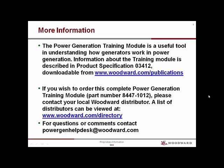This powerful interactive power generation training module is available to purchase. It allows a student to learn and understand many concepts of power generation. The model is operated on your PC and performs exactly like a real engine system. For more information, download product specification 03412 from our website at www.woodward.com/publications. The part number is 8447-1012 and can be purchased from your local Woodward distributor. A list of Woodward distributors can be viewed at www.woodward.com/directory.